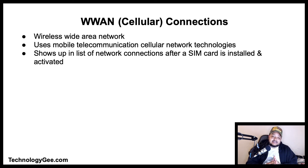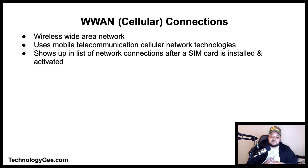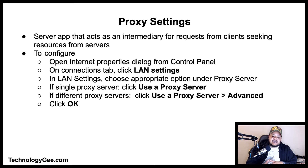A wireless wide area network (WWAN) is a form of wireless network that often differs from wireless LANs by using mobile telecommunication cellular network technologies such as 2G, 3G, 4G, and 5G to transfer data. A WWAN connection shows up in the list of network connections after a SIM card is installed and activated by a mobile provider. To use this type of connection, select it from the list of network connections displayed when selecting the network icon in the taskbar or Settings.